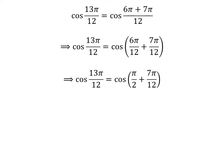Cancelling out the common factor in the numerator and the denominator in each fraction gives us cosine of 13 times pi upon 12 is equal to cosine of pi upon 2 plus 7 times pi upon 12.